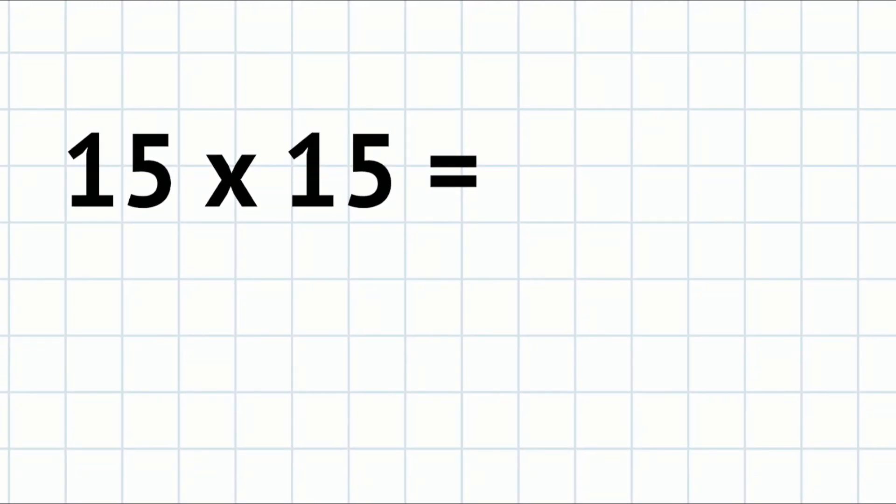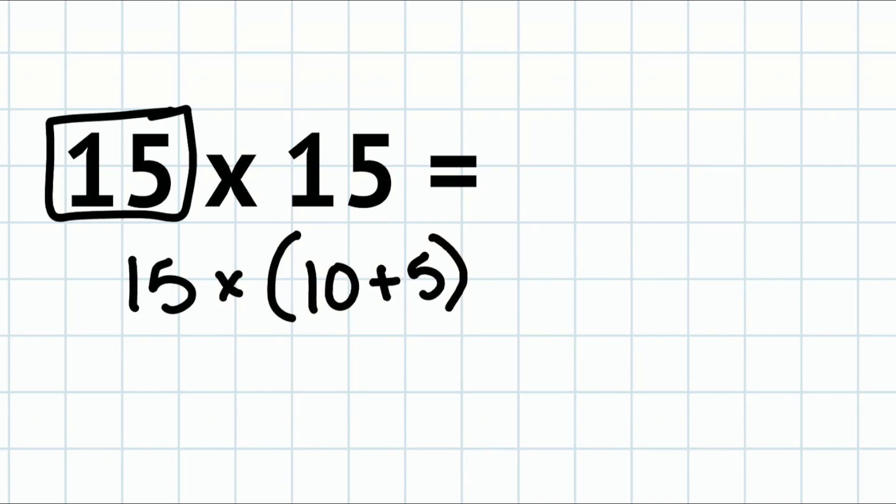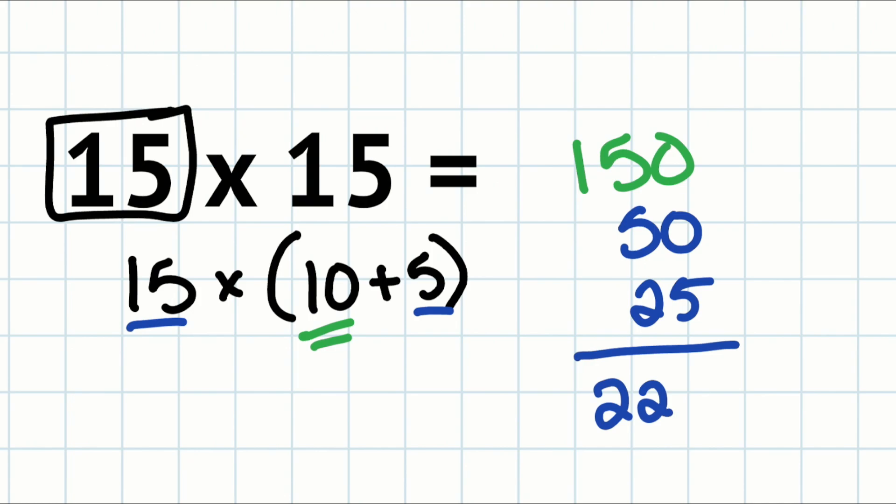15 times 15—well that's a little weird, right? We can split this up into 15 times 10 and 5. 15 times 10 would be 150, then 15 times 5—that's just 10 times 5 and 5 times 5, which is 50 and 25, so we have 225. Practicing doing all of this in your head is the point.